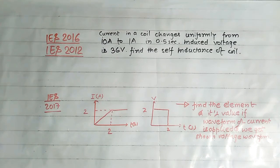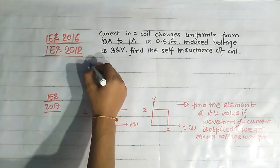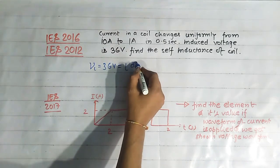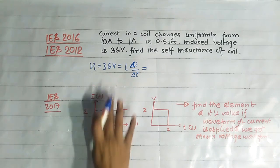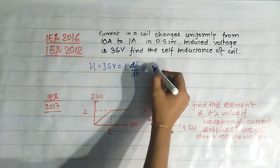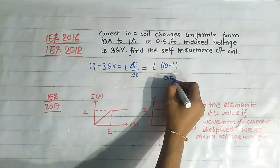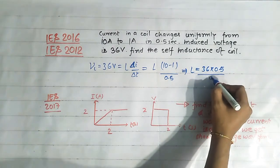Now see this question, asked in ES 2016 and ES 2012: current in a coil changes uniformly from 10 ampere to 1 ampere in 0.5 second, and the induced voltage is 36 volts. Find the self-inductance of the coil. We know VL equals L times di/dt. Change in current is 10 minus 1 equals 9 amperes, and change in time is 0.5 seconds. So L equals 36 times 0.5 divided by 9, giving 2 henry.